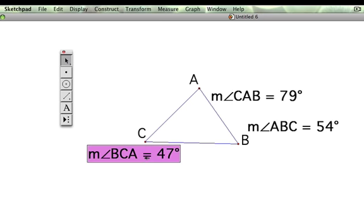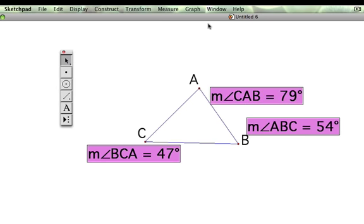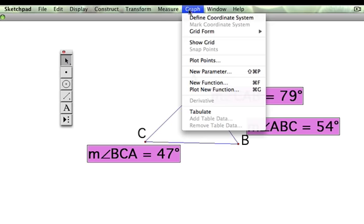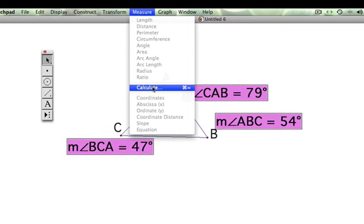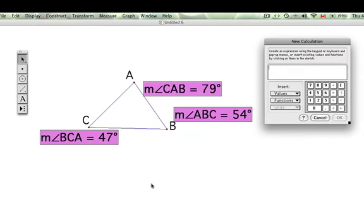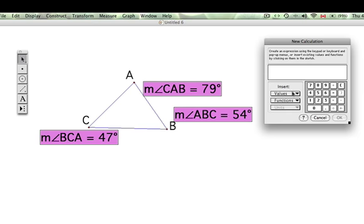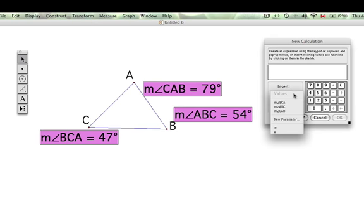So what we can do now is find the sum of these angles by clicking on all three measurements. And click on measure and calculate. And we get a calculator here. And in the values, the measurements for our various angles are here. So the first one is BCA.